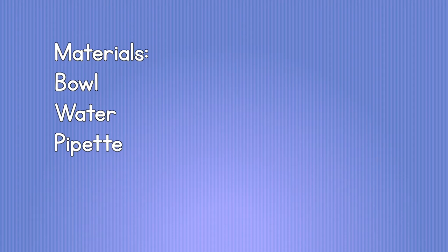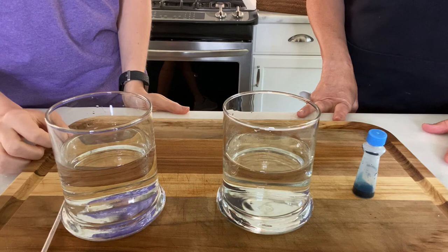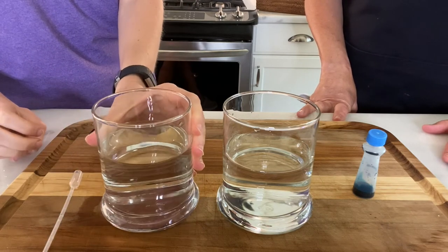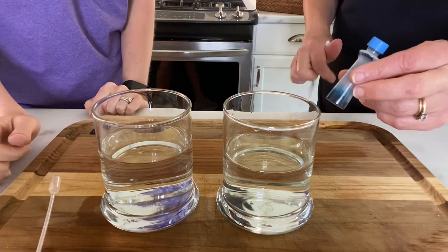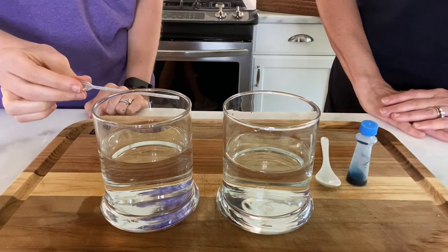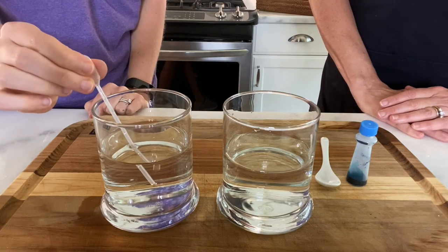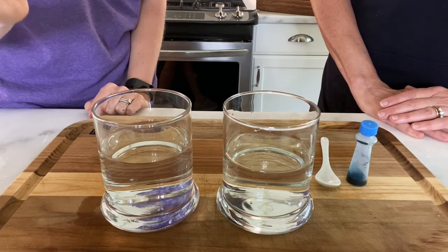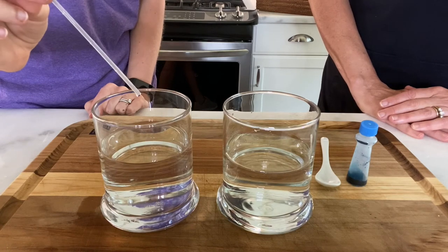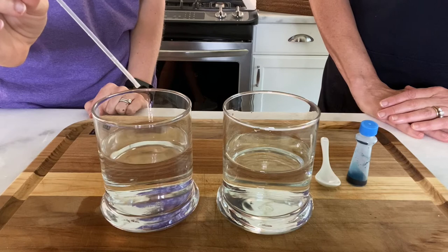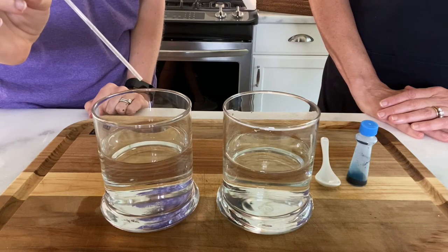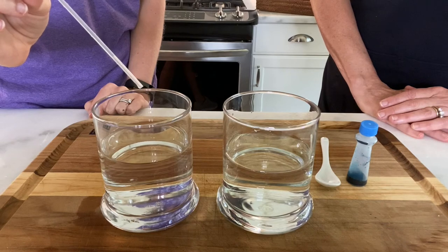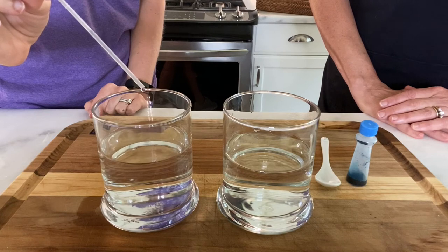For this stem extension — ripple effects — you'll need a bowl of water and a pipette. You'll need two glasses of water, a pipette, and you can get some food coloring if you'd like. Make sure both glasses are full. Take the pipette, stick it into the water, and squeeze it — you'll see those little bubbles. When you let go, the water will come up into the top. Then use the pipette to slowly drop a few drips of water into the jar and see if you can see the ripples. Do you see all those ripples? You can really see it when you go slowly.